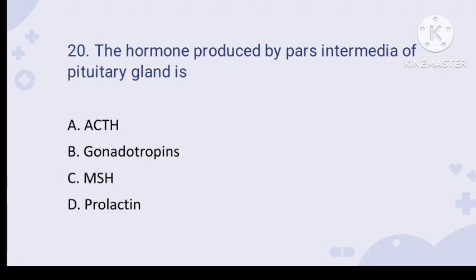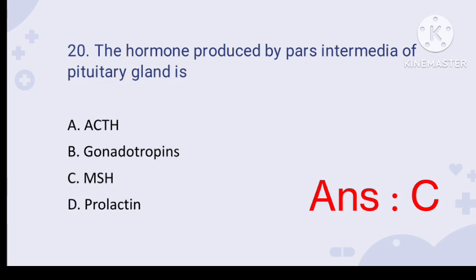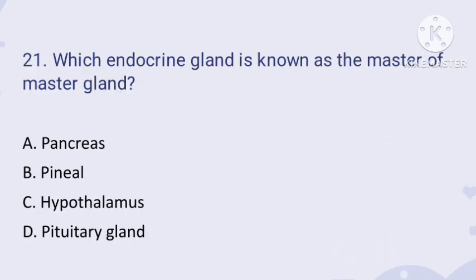Question number twenty — very important and most expected for KSET 2023: the hormone produced by the pars intermedia of the pituitary gland. The pars intermedia of the pituitary gland produces only one hormone: MSH — melanocyte stimulating hormone. Therefore, the right option is option C.